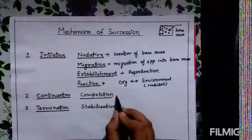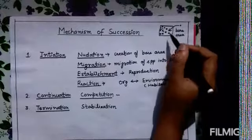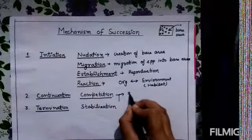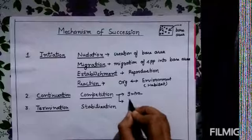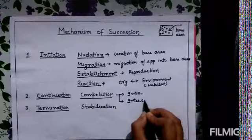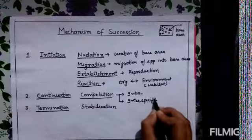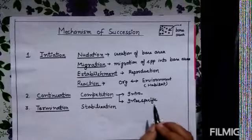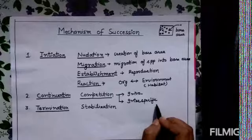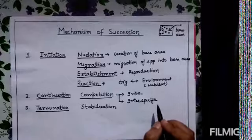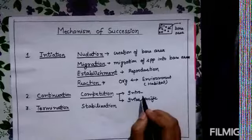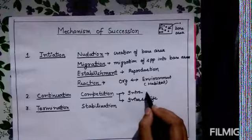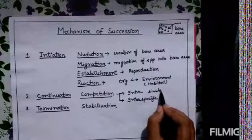In the second phase, continuation, we have competition because the particular area is now inhabited by a number of species. If a single species is present, then the competition would be intraspecific competition — competition within members of a particular species. When competition is between various different species, it would be interspecific competition. Interspecific competition would be much more pronounced in comparison to intraspecific competition because it involves competition for similar nutrients or similar resources.